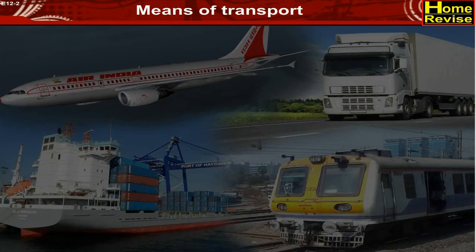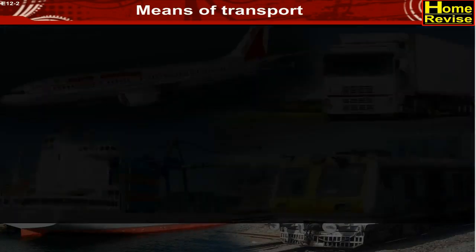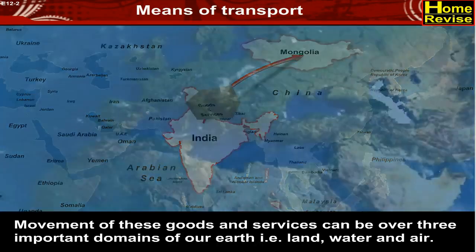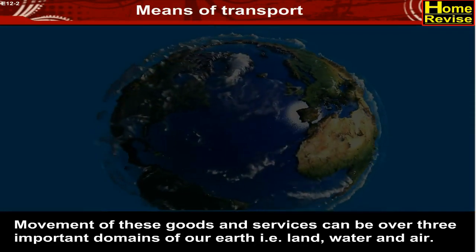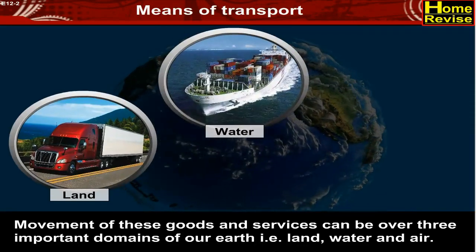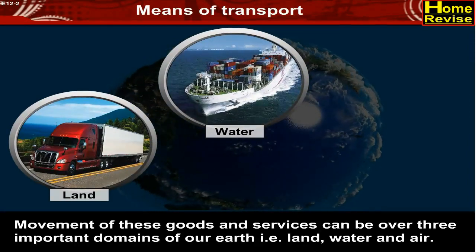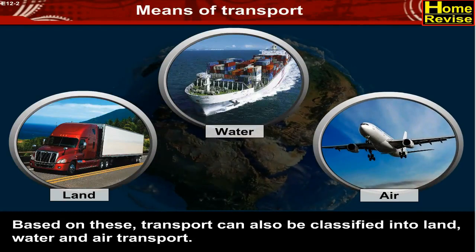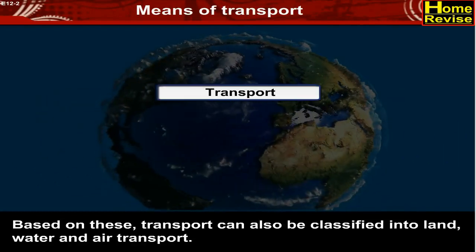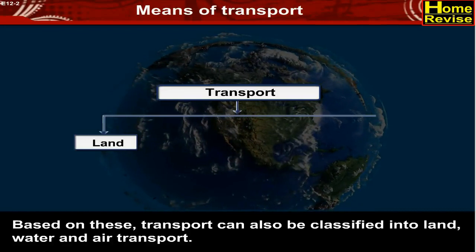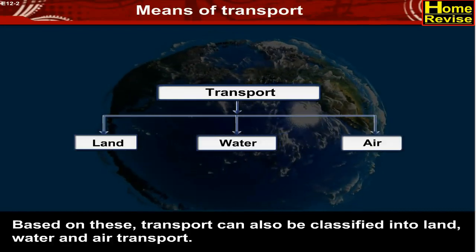Means of Transport. Movement of goods and services can be over three important domains of our earth — that is, land, water, and air. Based on these, transport can also be classified into land, water, and air transport.